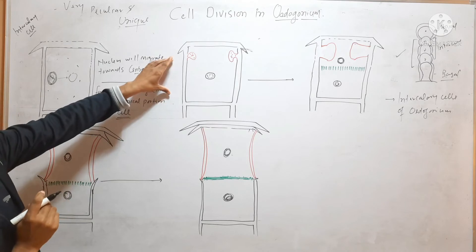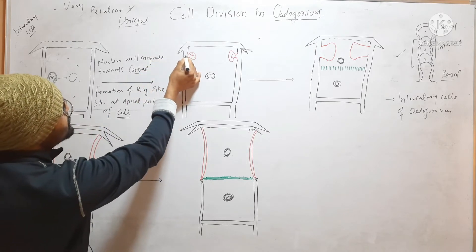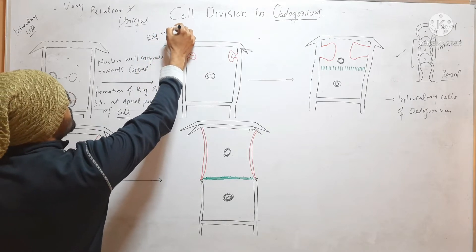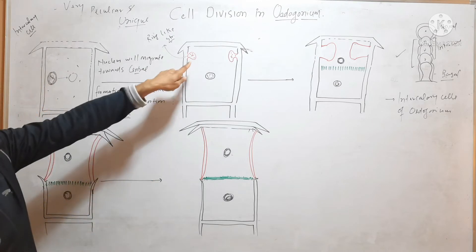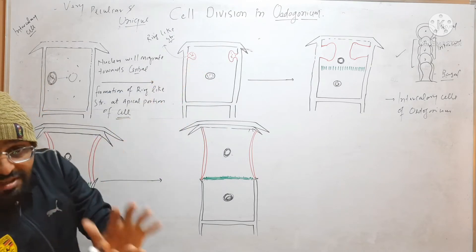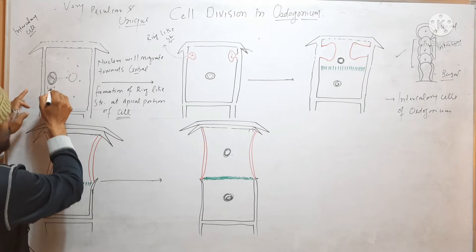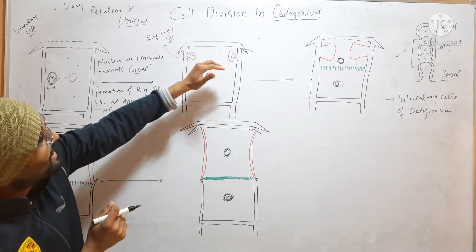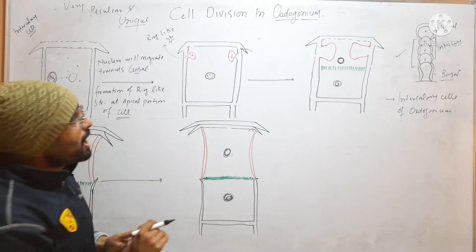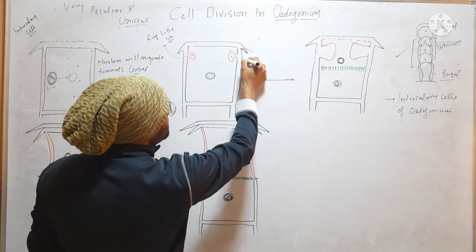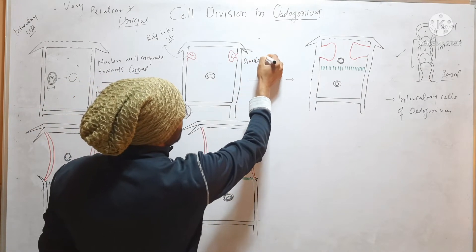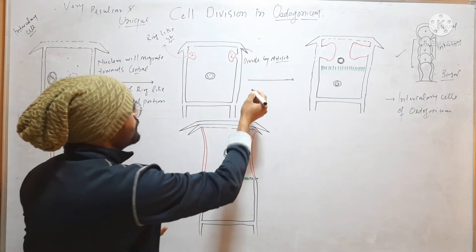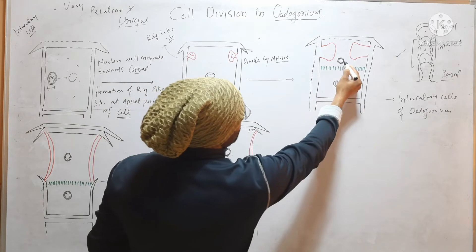Here is the cell that is dividing. At the apical portion of this cell, ring-like structures will form. So the first events are: the nucleus comes toward the center, and ring-like structures form at the apical portion of the cell. Then this central nucleus will divide by mitosis and form two nuclei.